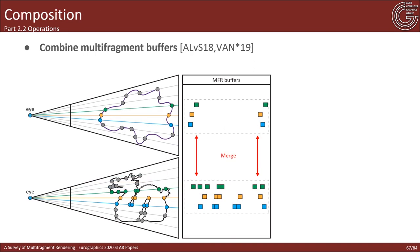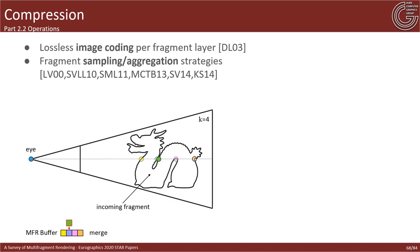Multi-fragment composition is a recently used operation for the generation of complex production images from multiple sources. This operation enables interesting additional capabilities — for example, one can efficiently insert additional information from one buffer to another without requiring the entire frame to be re-rendered. A number of offline and online techniques for compression have also been introduced, where compressed datasets are computed in ways that do not significantly affect the visual quality of target applications such as order-independent transparency, shadows, and anti-aliasing.